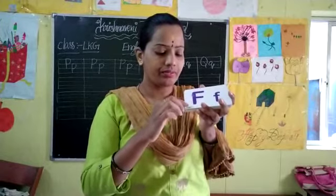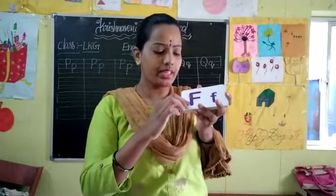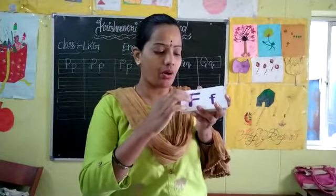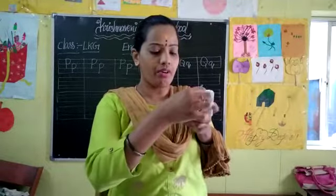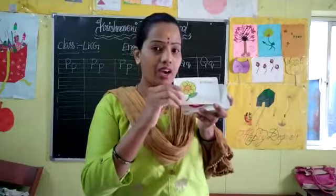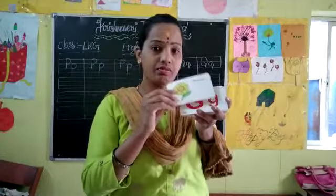And next letter is F. See here, capital F, small f. Capital F, small f. F for flower. F for flower.